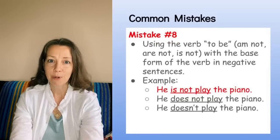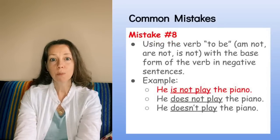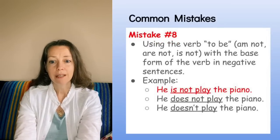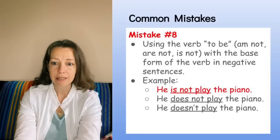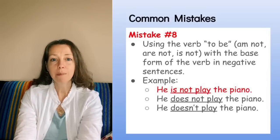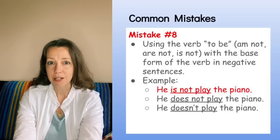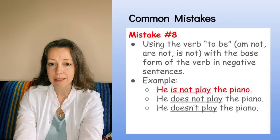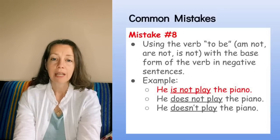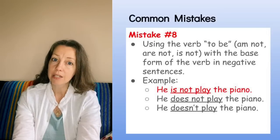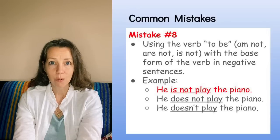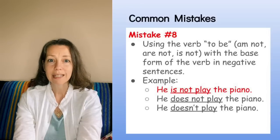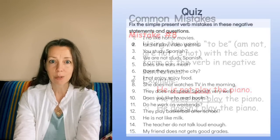Mistake number eight is using the verb 'to be' — 'am not,' 'are not,' 'is not' — with the base form of the verb in negative sentences. For example, 'He is not play the piano' is incorrect. The correct forms are 'He does not play the piano' or 'He doesn't play the piano.'